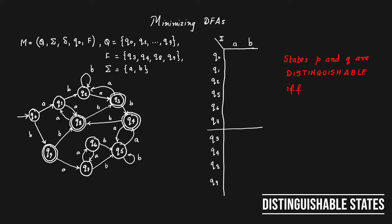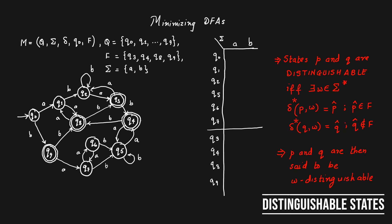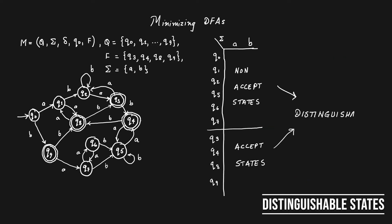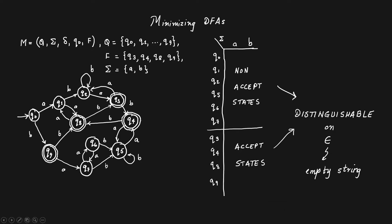The set of non-accept states and the set of accept states are distinguished by the fact that words reaching an accept state get accepted, whereas words taking you to a non-accept state are rejected. By definition these two types of states are different, which is where we get into what are called distinguishable states. Understanding distinguishable states allows us to minimize the DFA, since a minimized DFA contains no redundant states. If two states perform exactly the same function, we can delete one of them.